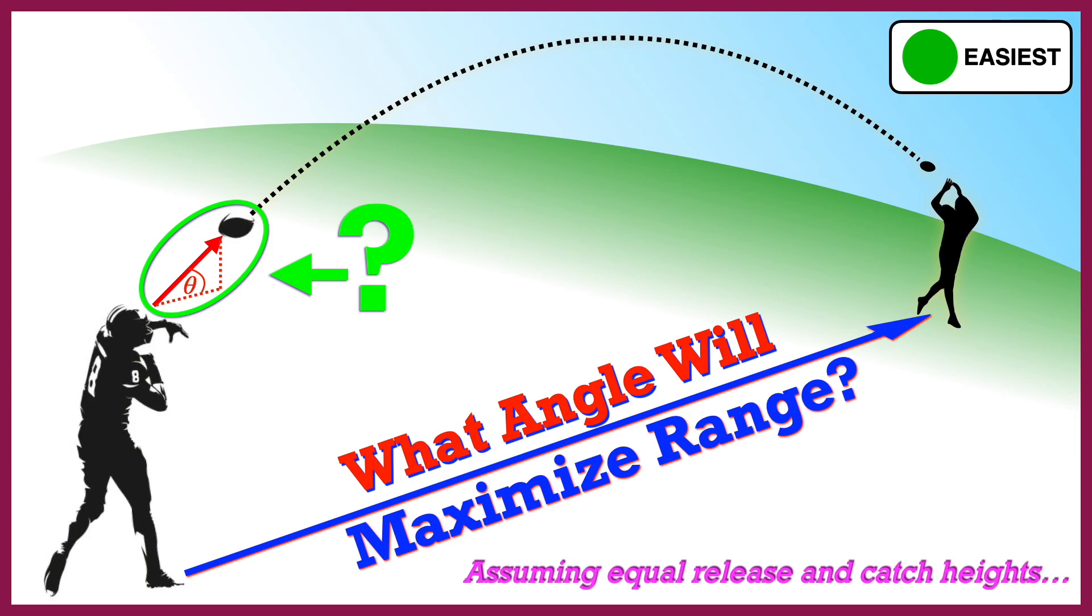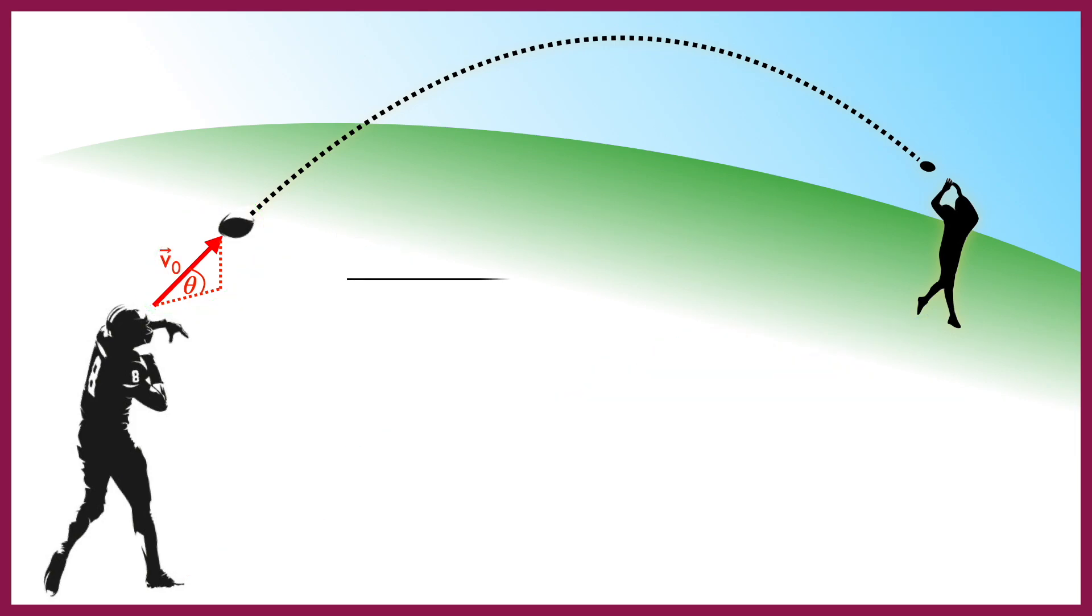First, I'm going to make a quick sketch of the scenario to visualize what's going on. The ball will be thrown and will follow a parabolic path until it's caught. It will be thrown with an initial velocity v-naught at some angle theta above the horizontal, and I'm going to call its range delta x. This is the value we're trying to maximize.